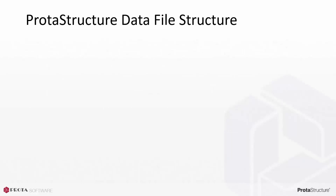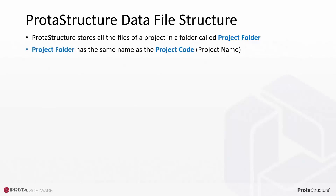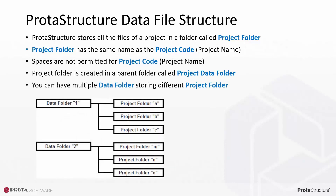Let's go through how Protostructure manages the model data and files. Protostructure stores all the files of a project in a folder called Project Folder. The Project Folder has the same name as the project code, which is the project name. Spaces are not permitted for project code. The project folder is created in a parent folder called Project Data Folder.